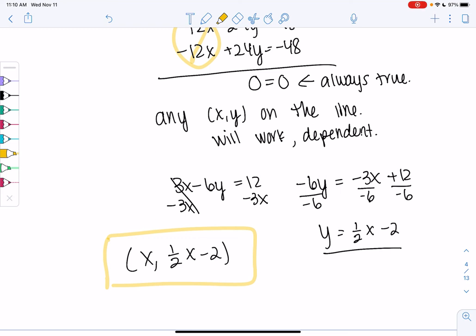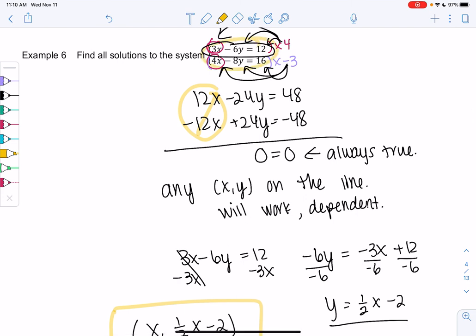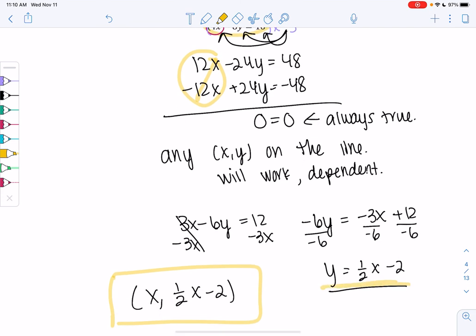And then if you were to graph, if you were to solve for y in both of these, you would actually get the exact same line. So they're both the line y equals 1/2 x minus 2.